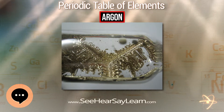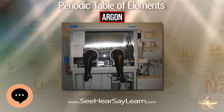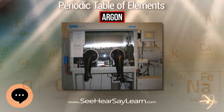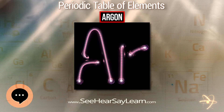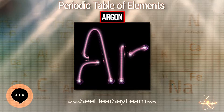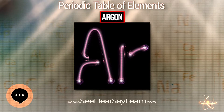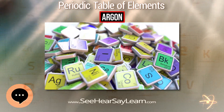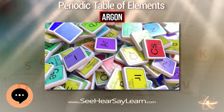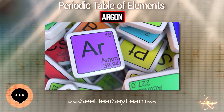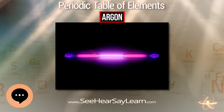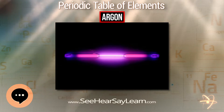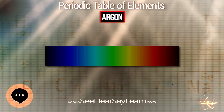The metastable ArCF₂²⁺ dication, which is valence isoelectronic with carbonyl fluoride and phosgene, was observed in 2010. Argon-36, in the form of argon hydride ions, has been detected in the interstellar medium associated with the Crab Nebula supernova — this was the first noble gas molecule detected in outer space.